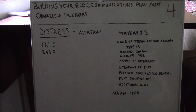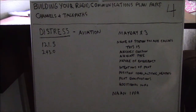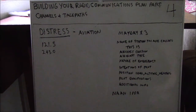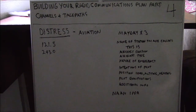Aviation distress frequencies are 121.5 MHz and 243 MHz AM. The aviation distress message format: Mayday three times, the name of the station you're calling (or 'any station'), your aircraft call sign, aircraft type, nature of emergency, pilot's intentions, position, level, altitude and heading, pilot qualifications, and any additional information. The mnemonic for this distress format is NAN-IPA.